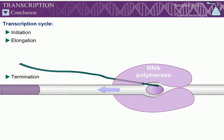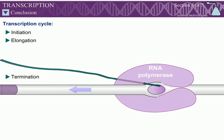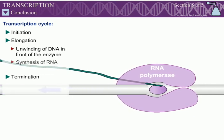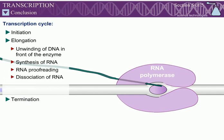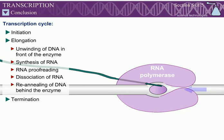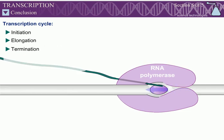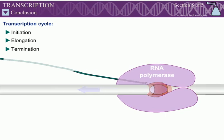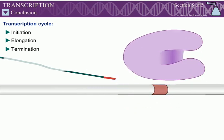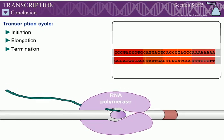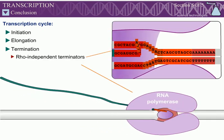During elongation, RNA polymerase unwinds the DNA in front of the enzyme, synthesizes RNA, proofreads RNA, dissociates RNA from the DNA, and re-anneals the DNA behind the enzyme. During termination, sequences called terminators trigger the elongating polymerase to dissociate from the DNA and release the completed RNA chain. Bacteria have two types of terminators: rho-independent and rho-dependent.